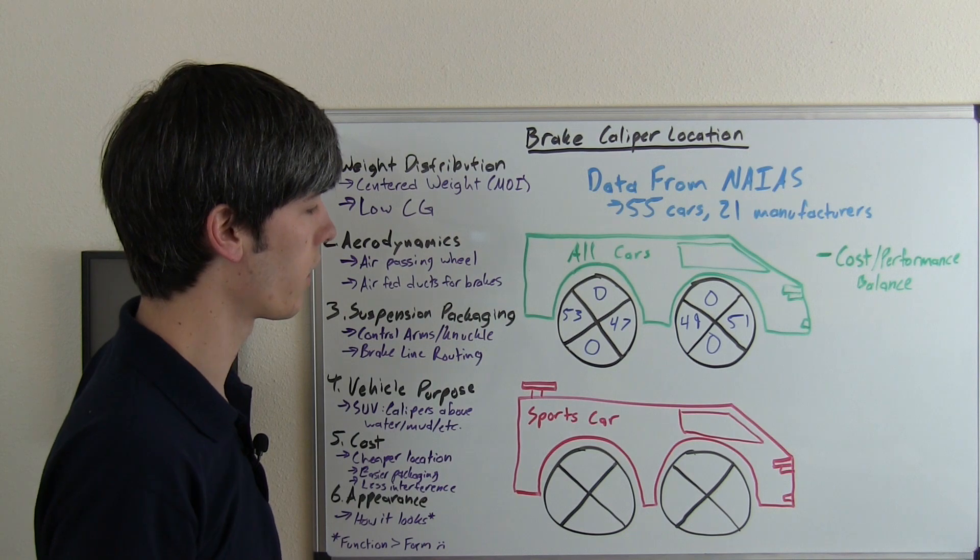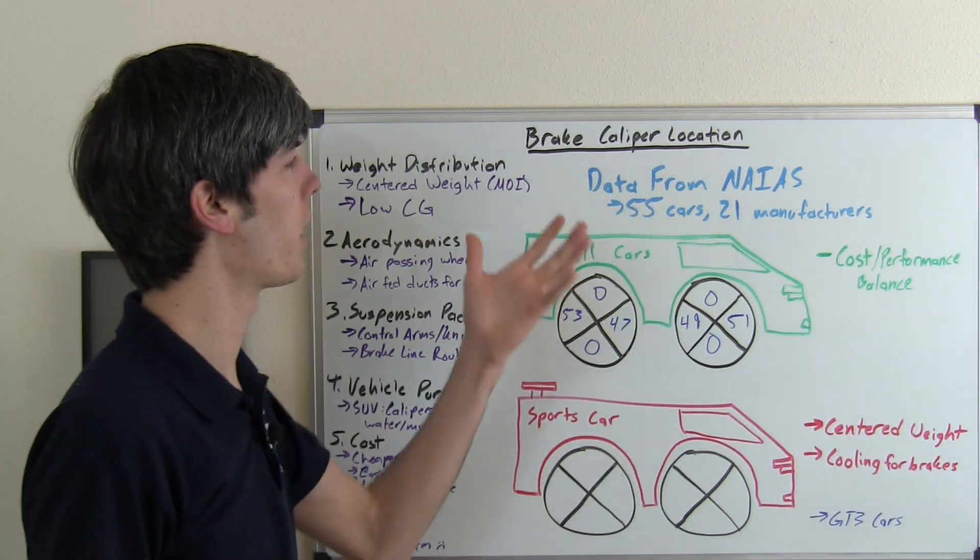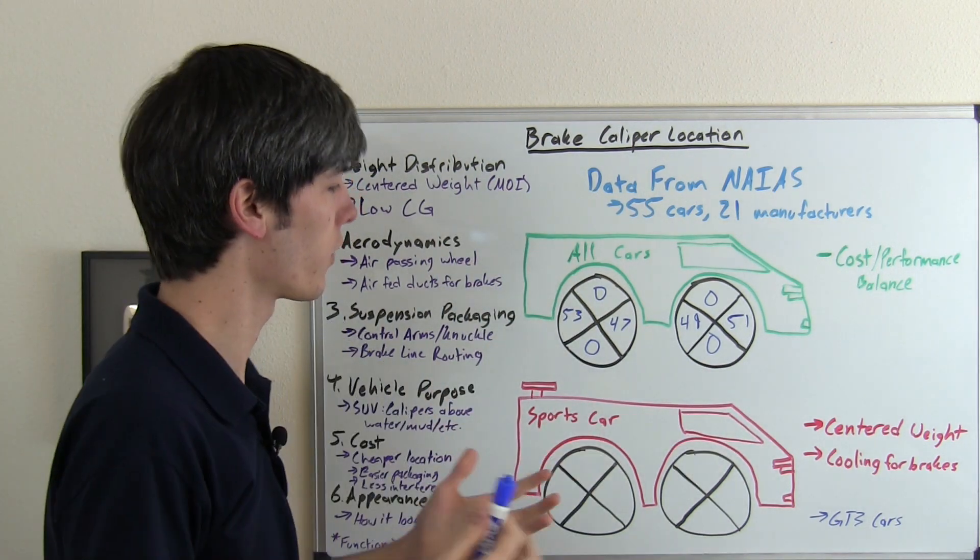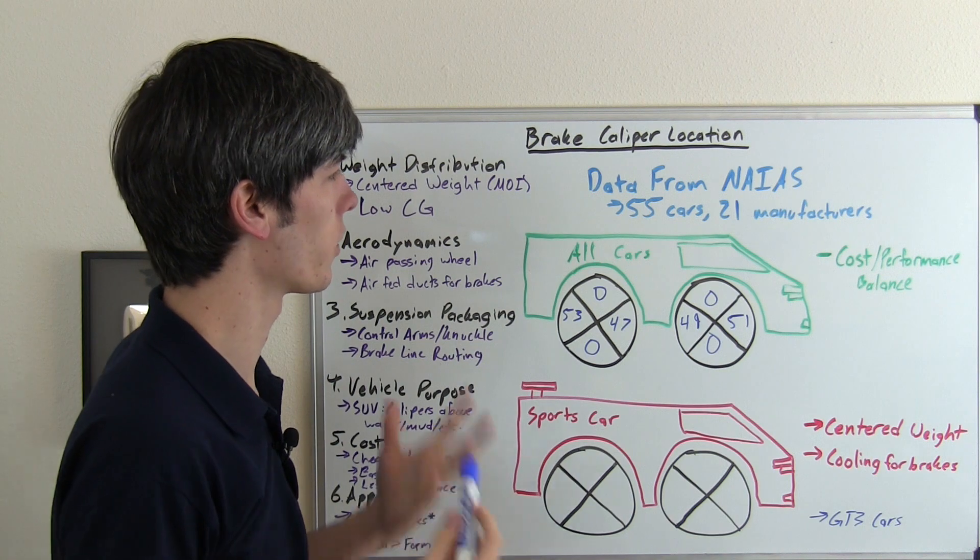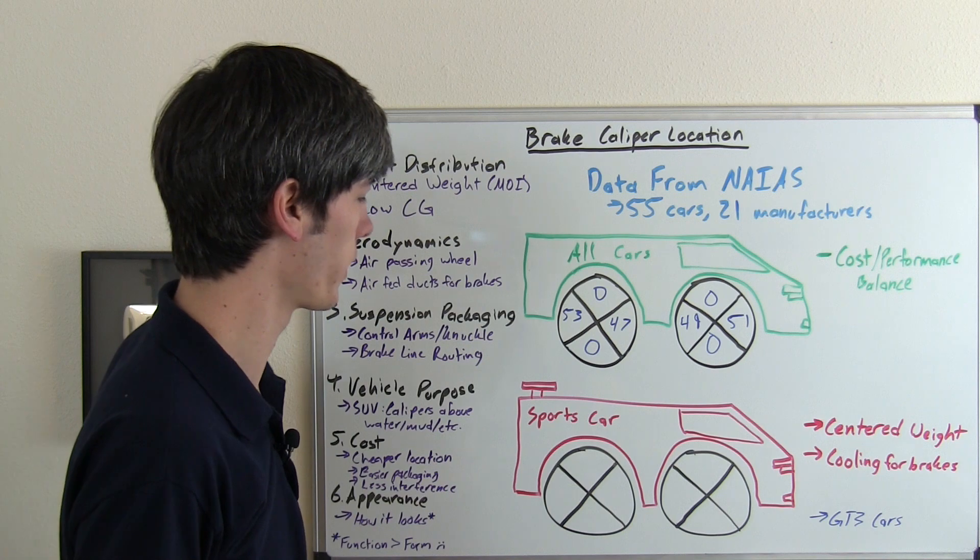I wasn't quite satisfied there. So I took a look at some different sports cars. So of these 55 cars, about half of them were sports cars, things like Porsche, Corvettes, Vipers, things like that, where they're obviously being geared towards a track friendly car that's performance oriented.